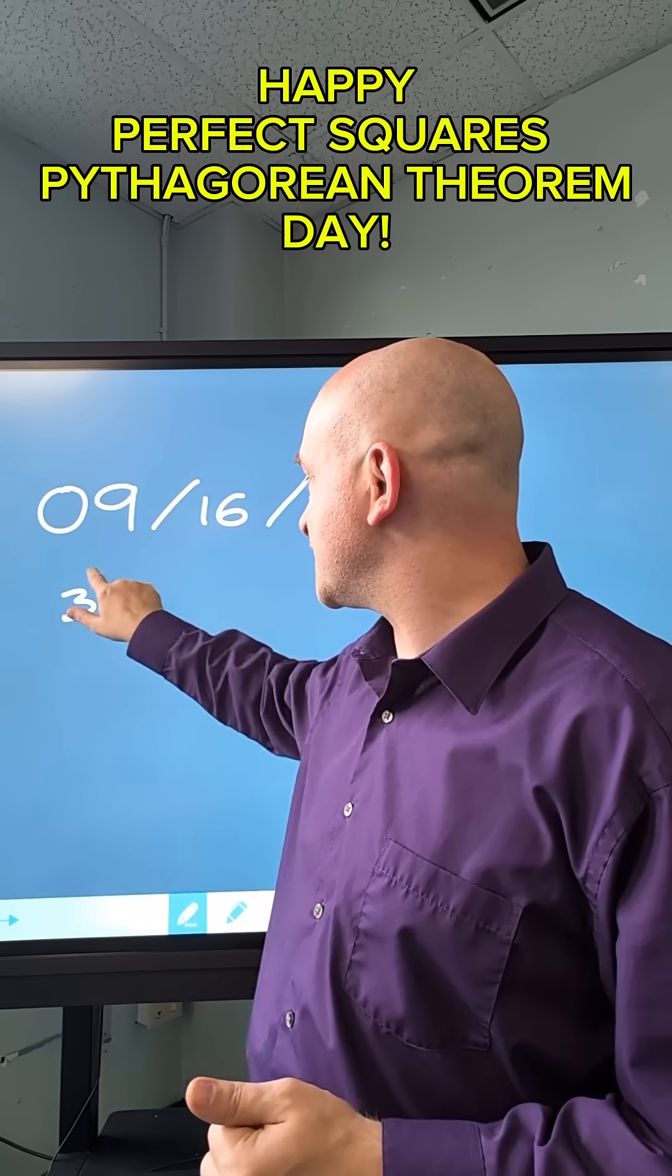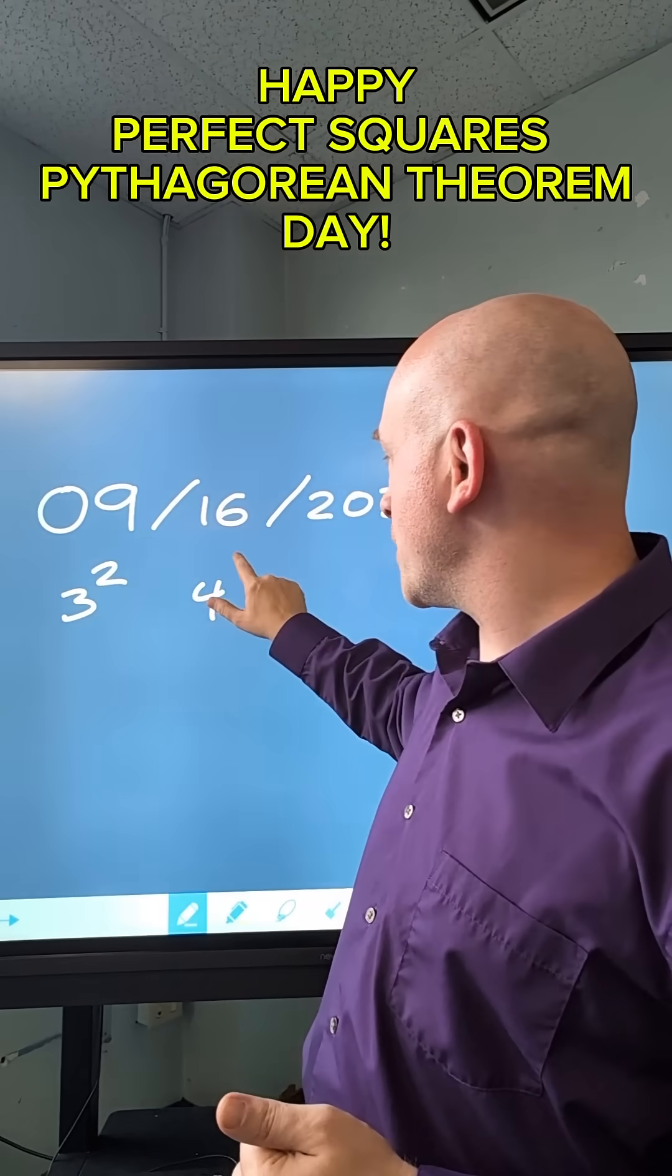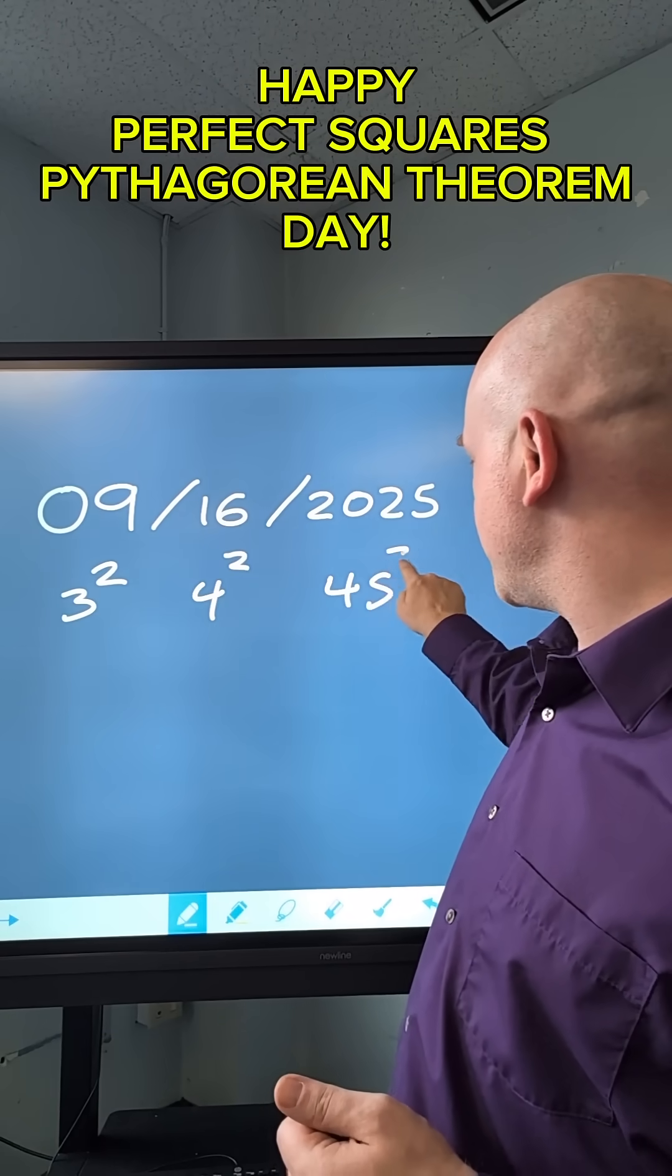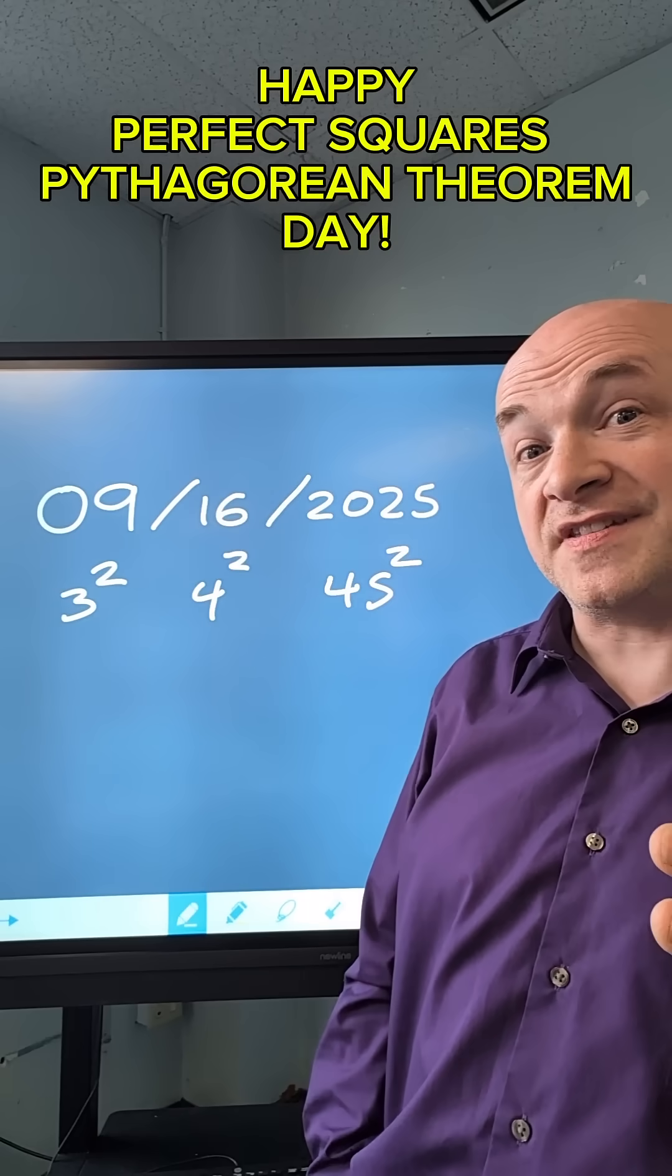Yes, it is in fact Perfect Squares Day because 9 is 3 squared, 16 is 4 squared, and the year 2025 is 45 squared.